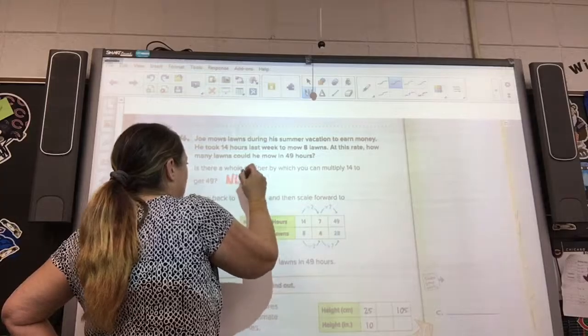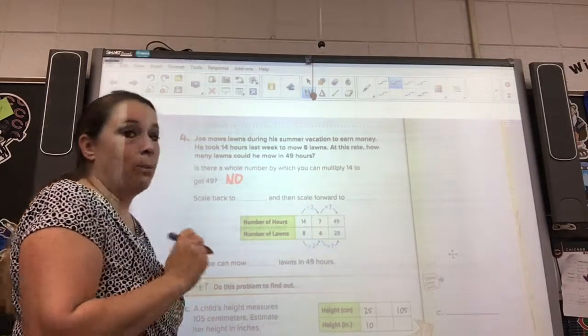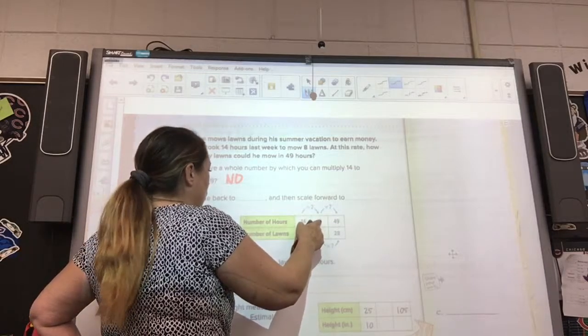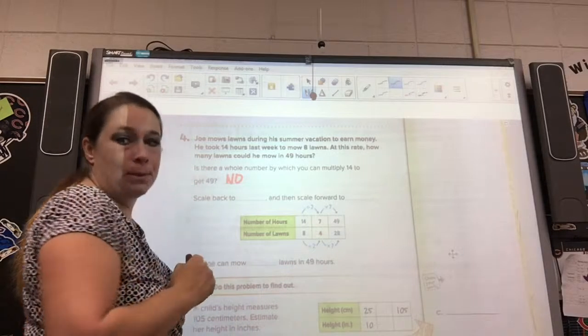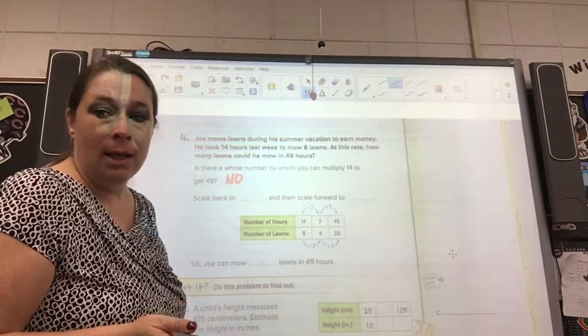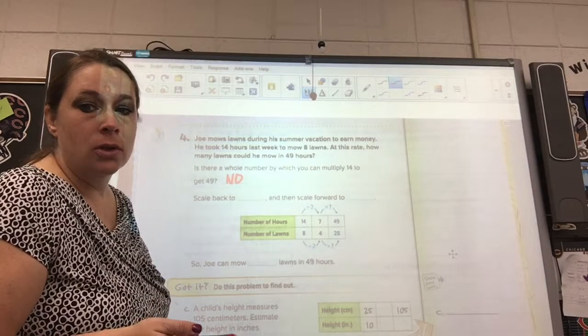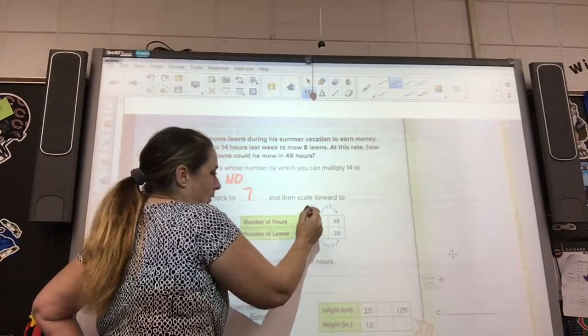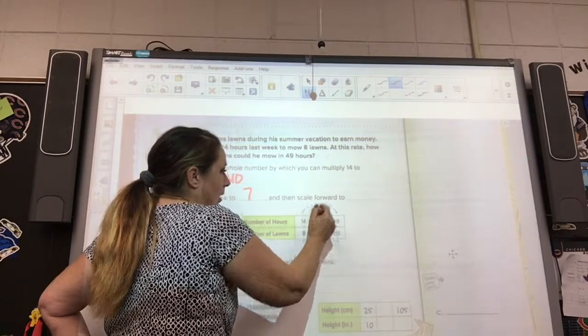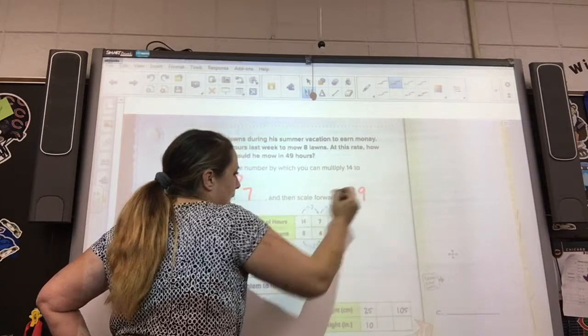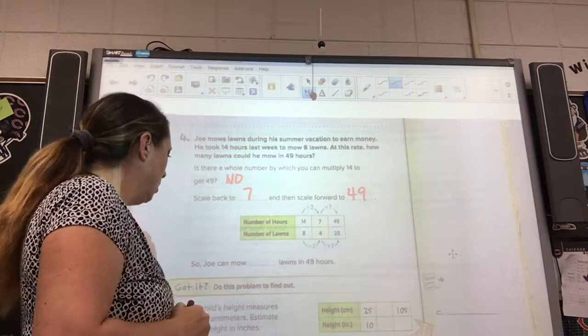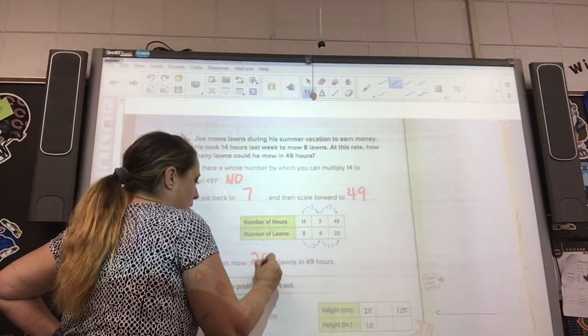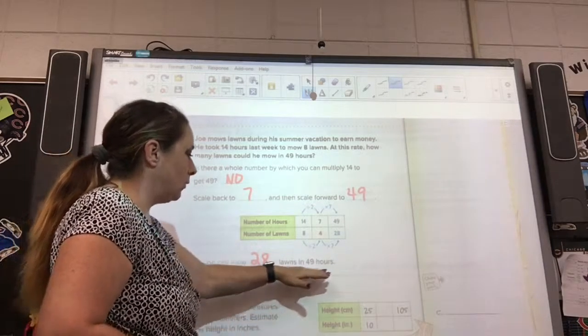So the answer here is no. So if we scale back, if we divide down, 14 divided by 2, then we can multiply up times 7 and get to 49. So we are going to scale back to 7, divide by 2, scale back to 7, scale forward to 49. So now Joe can mow 28 yards or lawns in 49 hours.